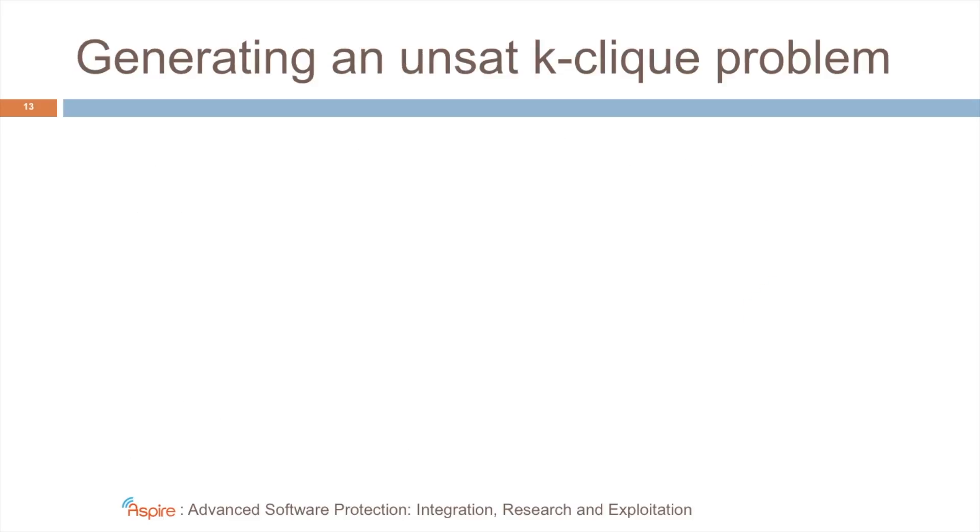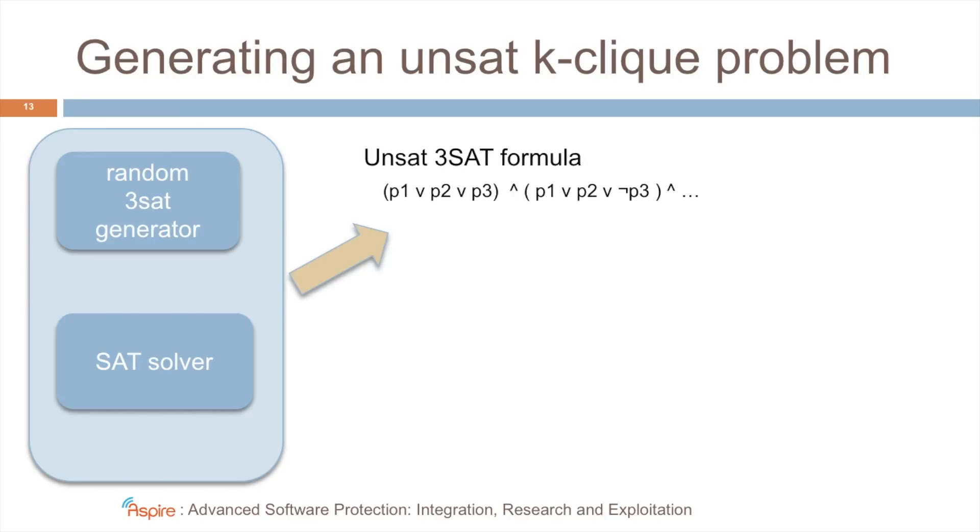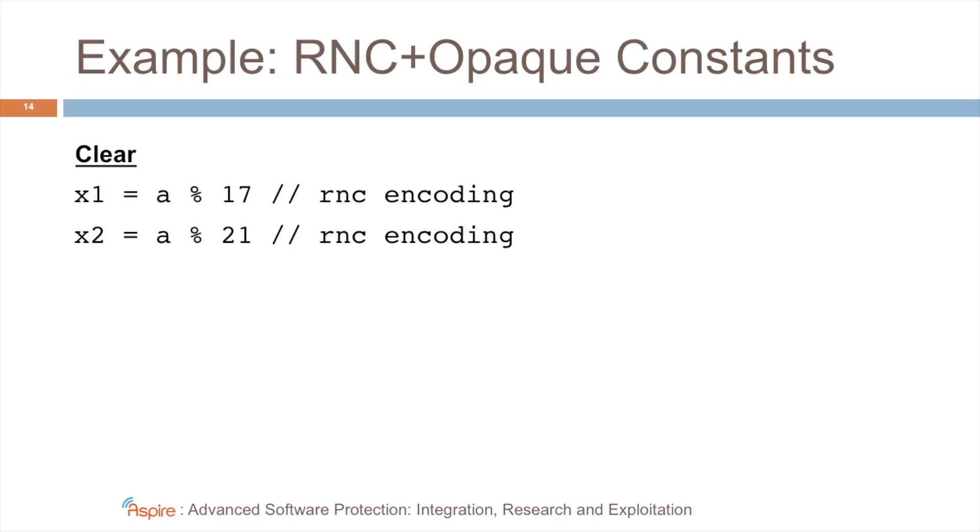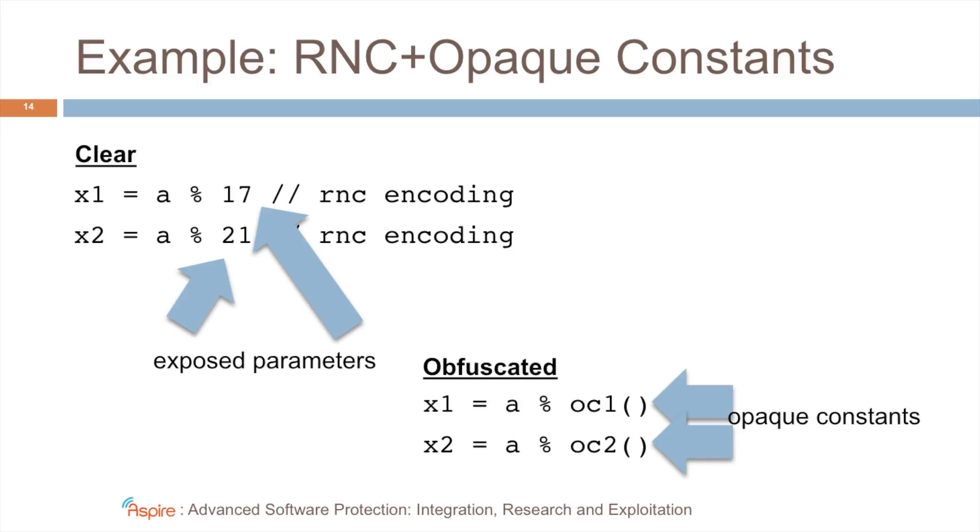So how does it work? How do we generate an unsatisfiable K-CLIQUE problem? Well, we start from a random 3-SAT generator and a SAT solver. From that, we get an unsatisfiable 3-SAT formula, and then using Karp's reduction, this is converted into an unsatisfiable K-CLIQUE problem. For example, if these were the original constants, and we had some exposed parameters for residue number coding, we'll replace this with obfuscated code, where the constants are computed on the fly, based on an instance of the K-CLIQUE problem.